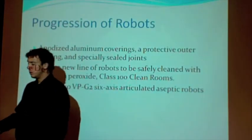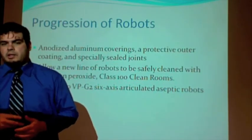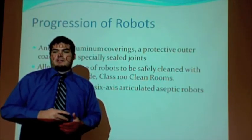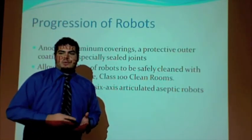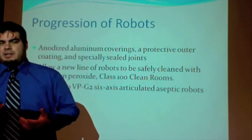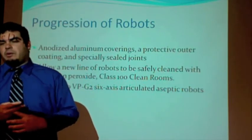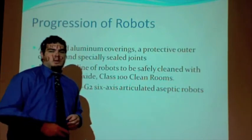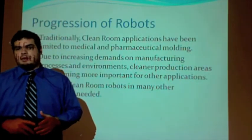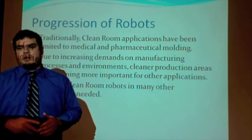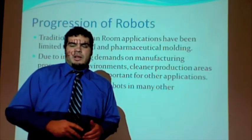Moving from the progression of robots to clean room use: robots needed to be upgraded and changed. Anodized aluminum coverings, protective outer coatings, and specialty sealed joints allow robots to be safely cleaned with hydrogen peroxide, making them Class 100 robots that meet clean room standards. One such robot is the Denso VP-G2 six-axis articulated aseptic robot, traditionally used in clean rooms and limited to medical and pharmaceutical molding. Due to increasing demand, cleaner production areas are becoming more important for other applications, so the need for clean room robots is growing.